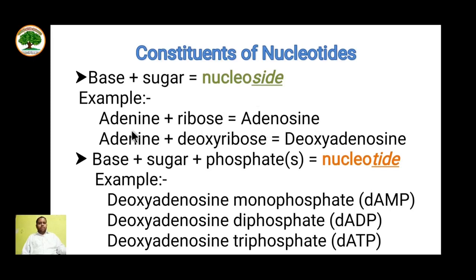When adenine is added with deoxyribose sugar, it is deoxyadenosine. When the phosphate group is added to the nucleoside, it becomes a nucleotide.